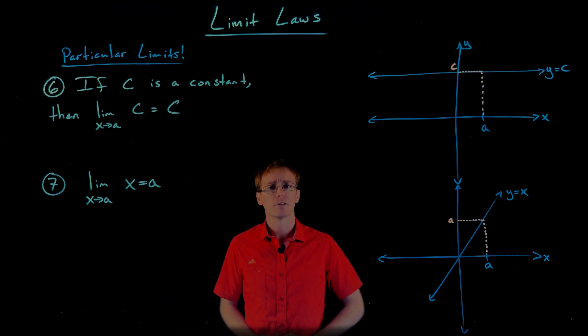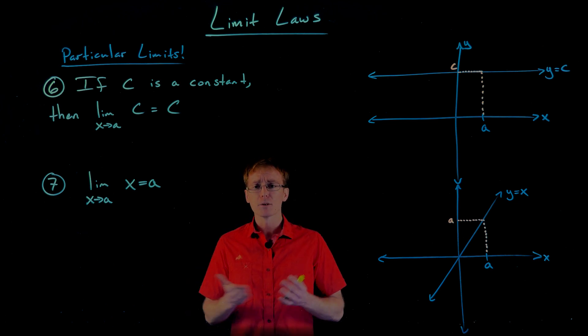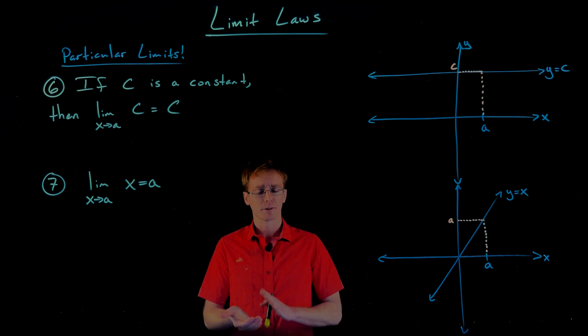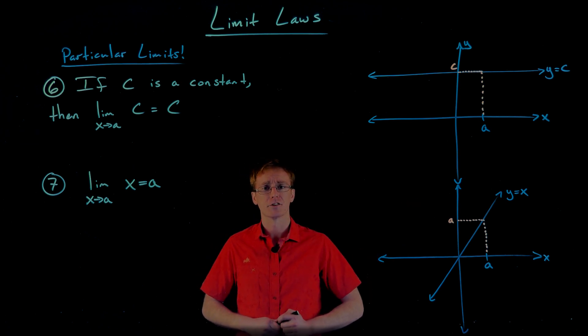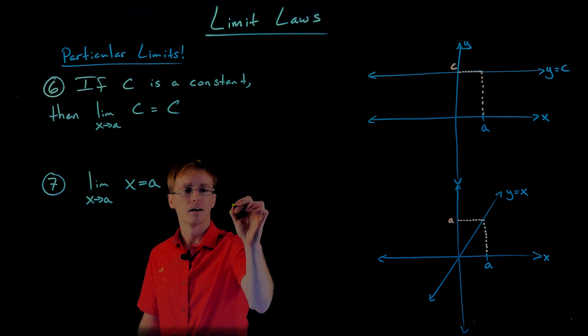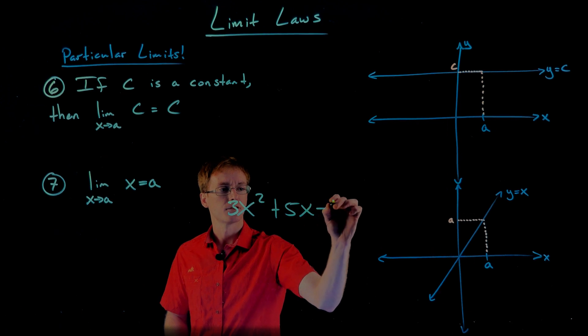And these two particular limits probably seem pretty obvious, hopefully. But they're really powerful because when we combine them with the constant multiple rule, our sum and difference rule, and really in particular, our power rule, it lets us create a lot more functions that are much more complicated than these two. For example, if we wanted to create any polynomial, like maybe 3x squared plus 5x minus 4, something like that,